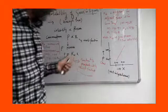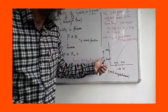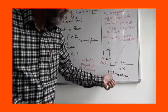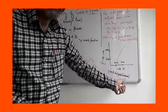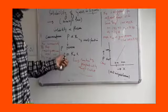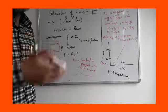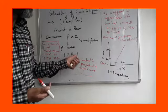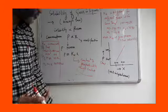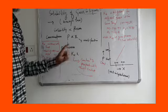If we plot a graph between X and the partial pressure of a gas in solution — for example, HCl in cyclohexane — we will get a linear graph. This means the partial pressure of the gas in the vapor phase varies linearly with the mole fraction of the gas in the solution. So P = KH · X.